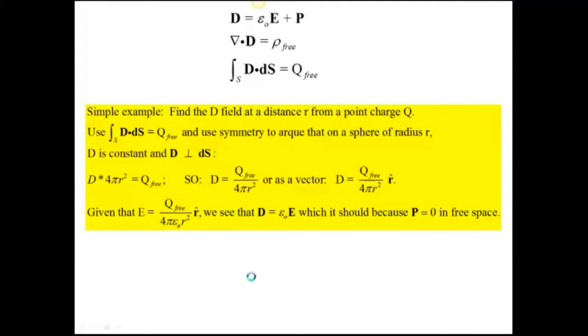So let's do a simple example. Let's find the D field at a distance r from a point charge Q. What we do is we start with the fact that there's only free charge. So if we stick in the D into the surface integral, we only need to know the Q free. Obviously, we want to use the symmetry to argue that on a sphere of radius r, D is constant, and D is perpendicular to dS. Well, we've done this problem enough for E fields that we know that that's the case for a point charge. So we do the integral. Because we have the symmetry, we just multiply by the area of the sphere, which is of radius r, and set that equal to Q free. So this over here is the integral, the surface integral, and this is the right-hand side Q free.